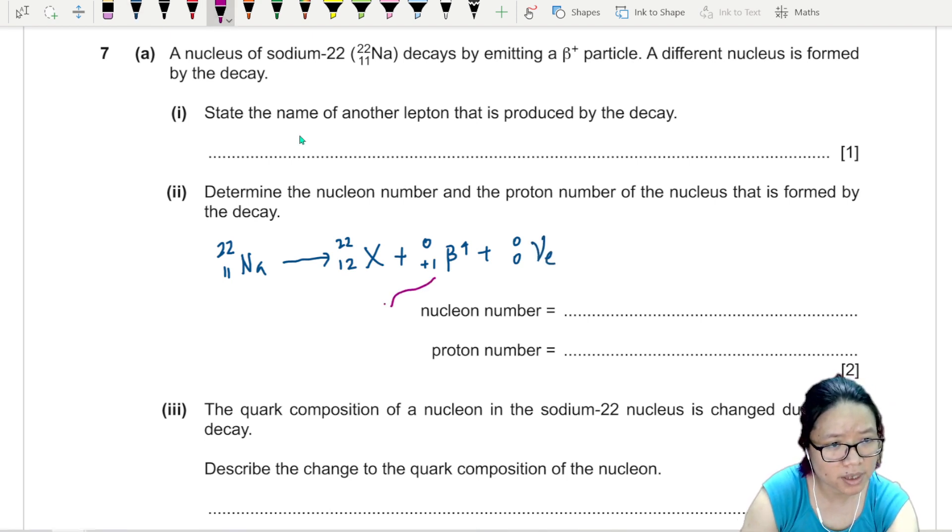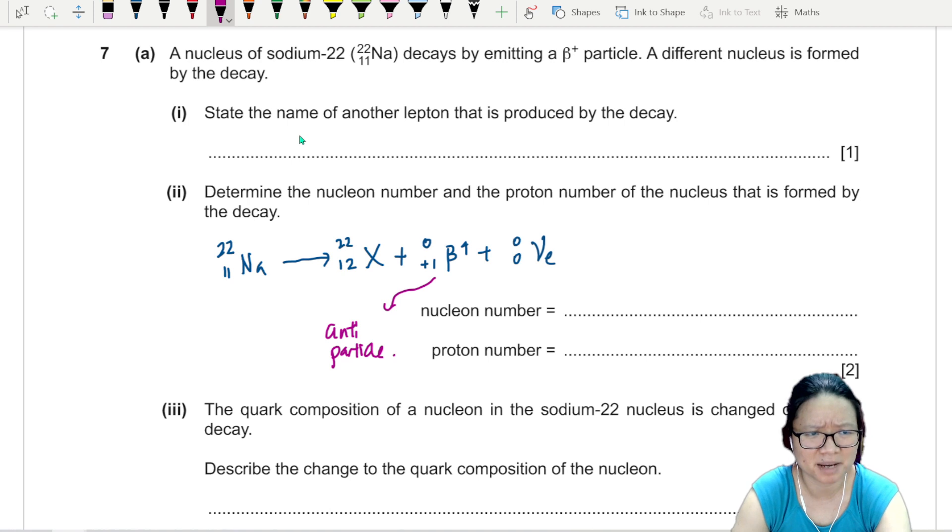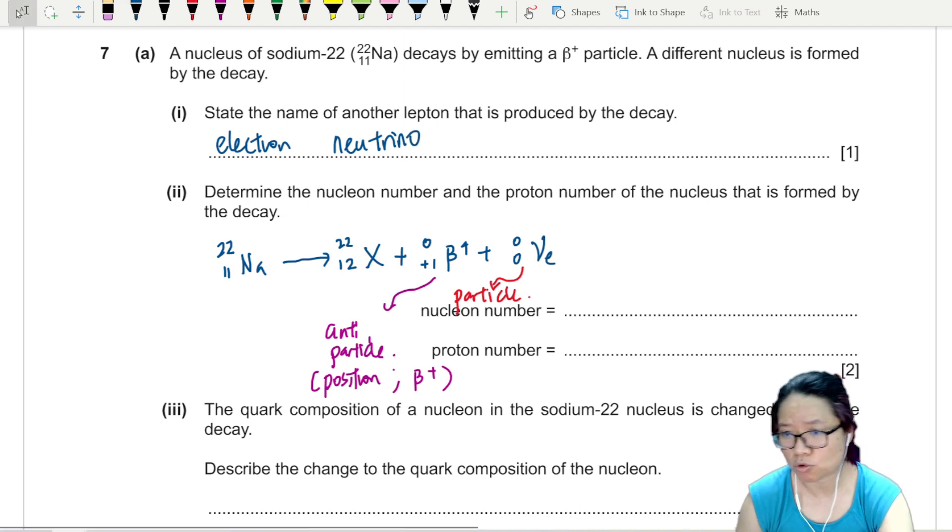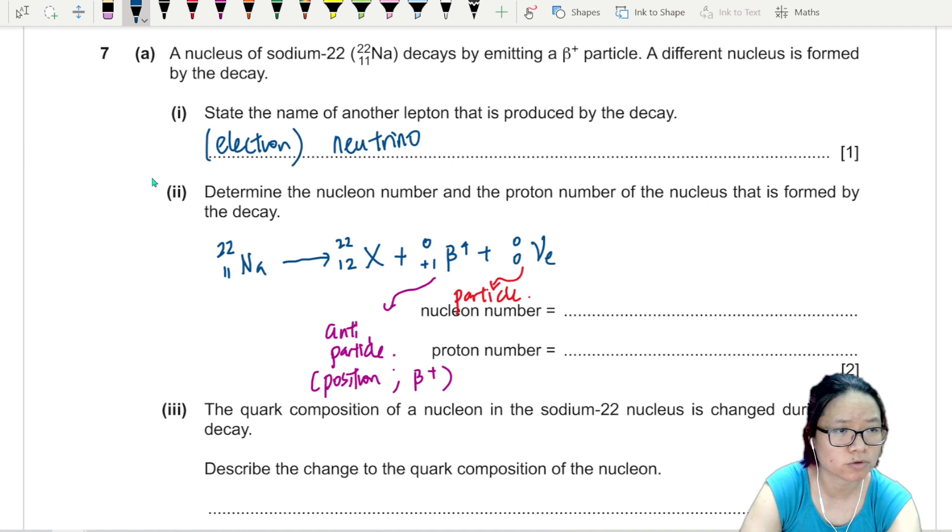This one here is an antiparticle, because it's a positively charged electron - an antiparticle known as a positron or beta plus. These are all the codenames. So antiparticle must pair with a particle. So a particle here means this one is known as a neutrino.